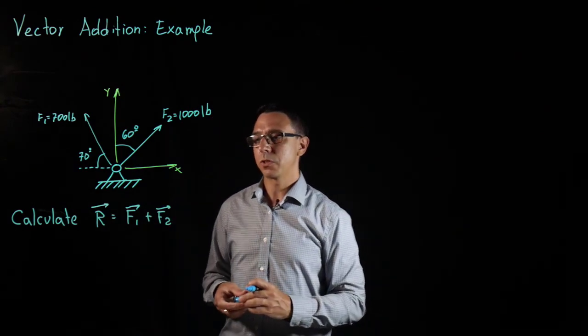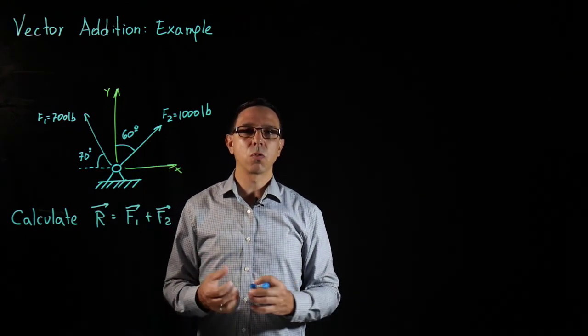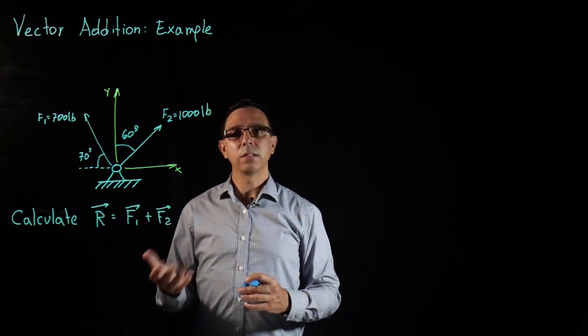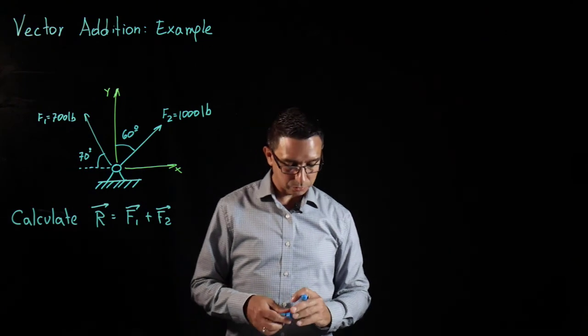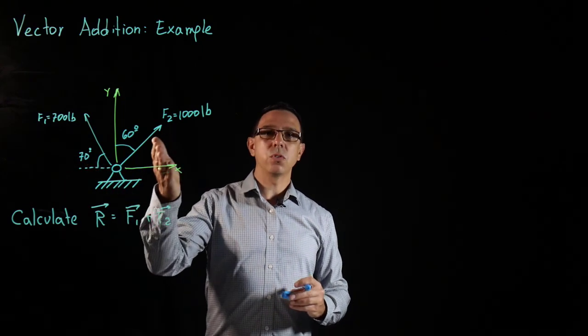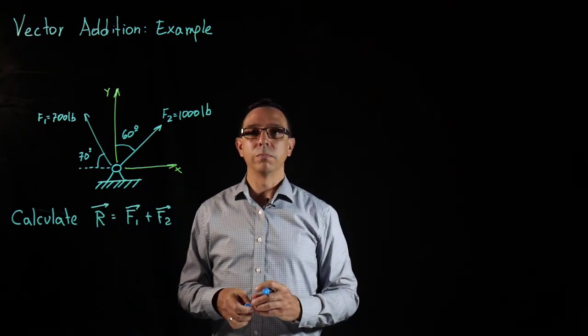My strategy is first to take these two forces F1 and F2 and convert them in Cartesian vector form. Once I have those vectors in Cartesian vector form, I can easily add them and provide the answer in Cartesian vector form as well. So my first step is I need to take these forces, F1 and F2 and express them in that Cartesian vector form.